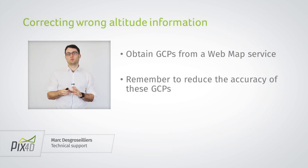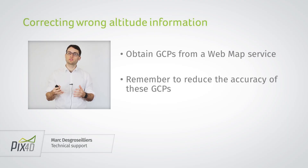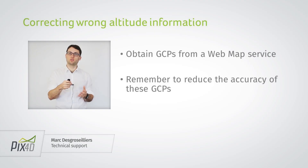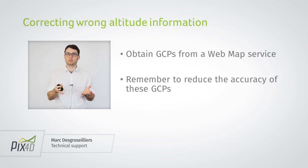One problem that we encounter often in support is that the altitude of the project is not correct. Most of the time this is because the EXIF information — the altitude information written in the images — is not correct itself. The whole model is going to use this altitude information, so the whole model will not have the correct altitude. It is possible to correct this.